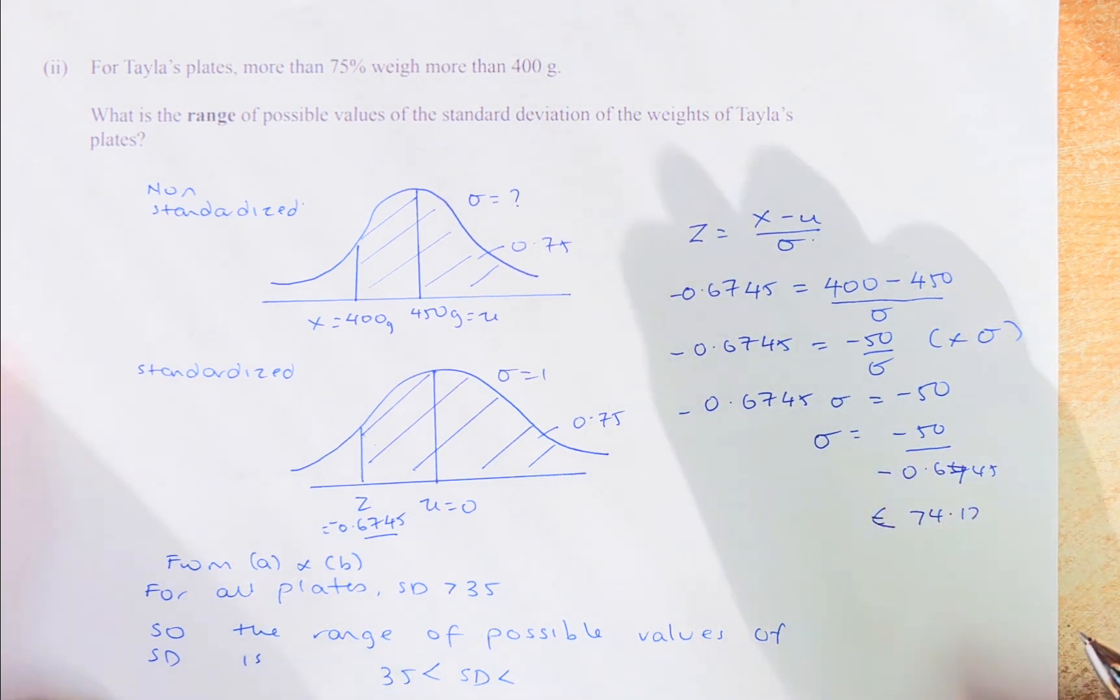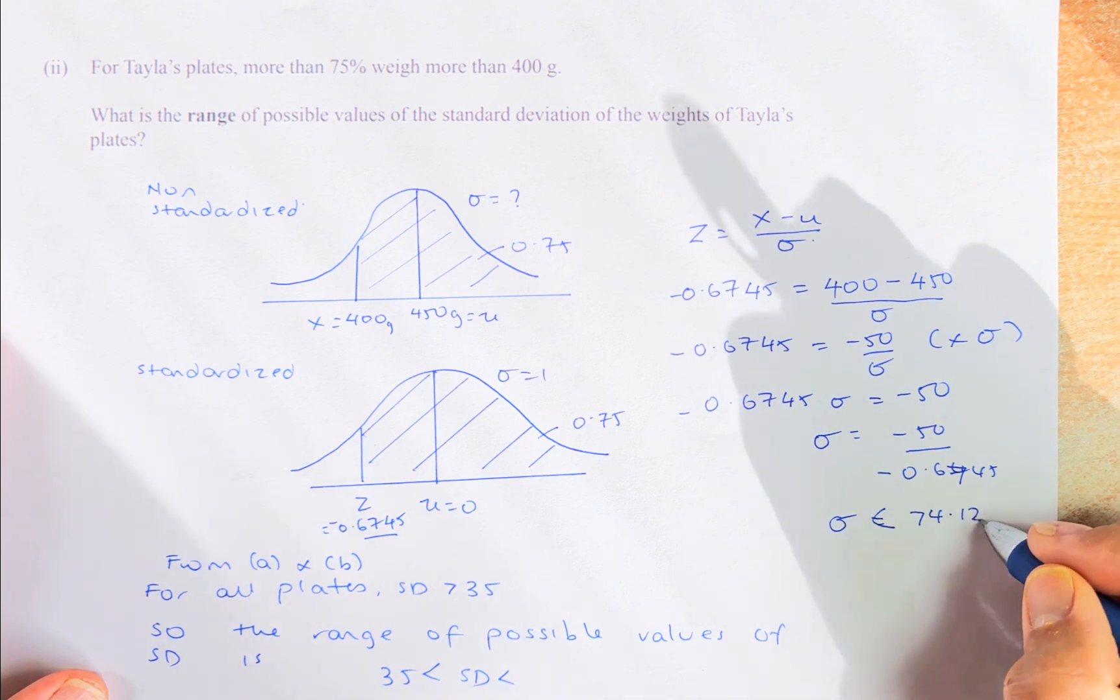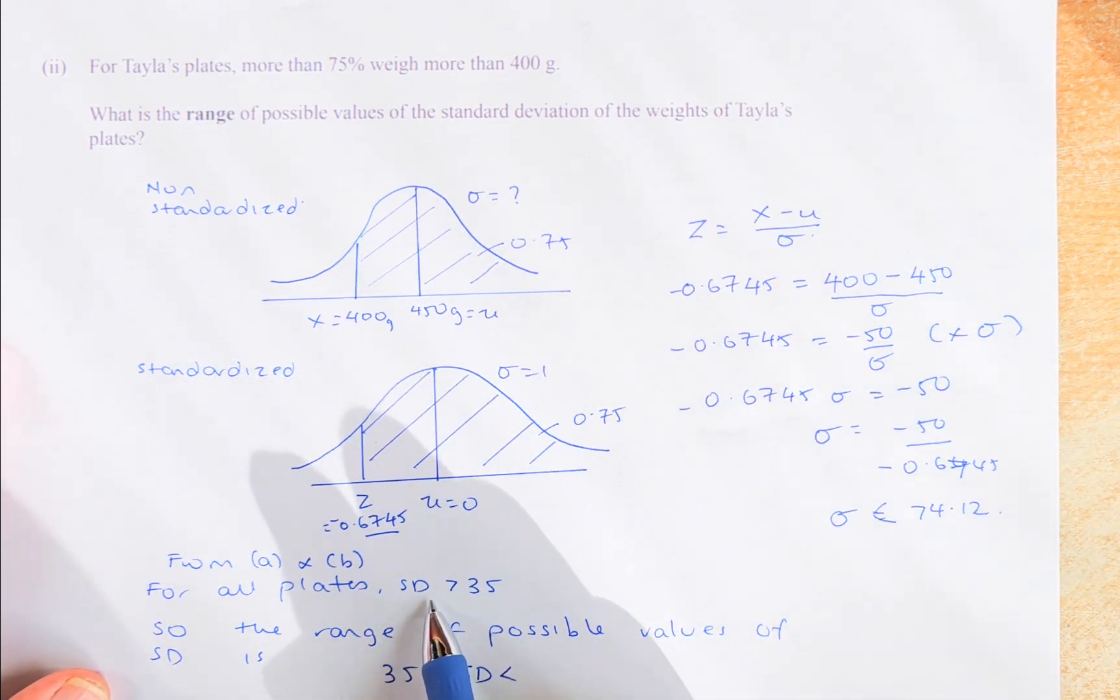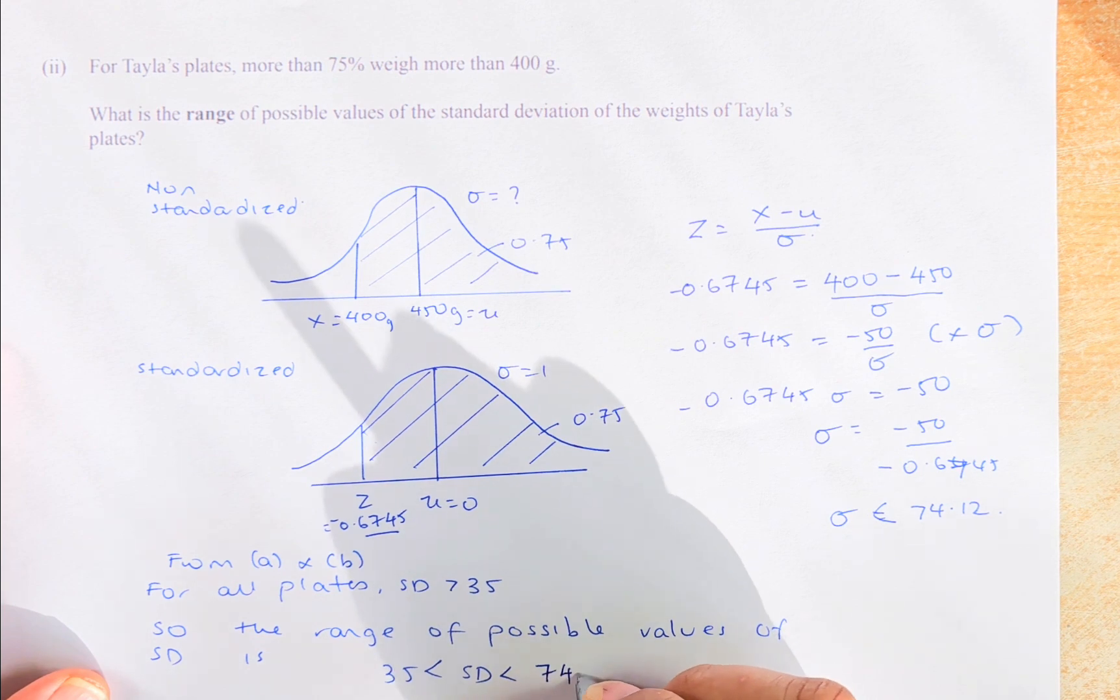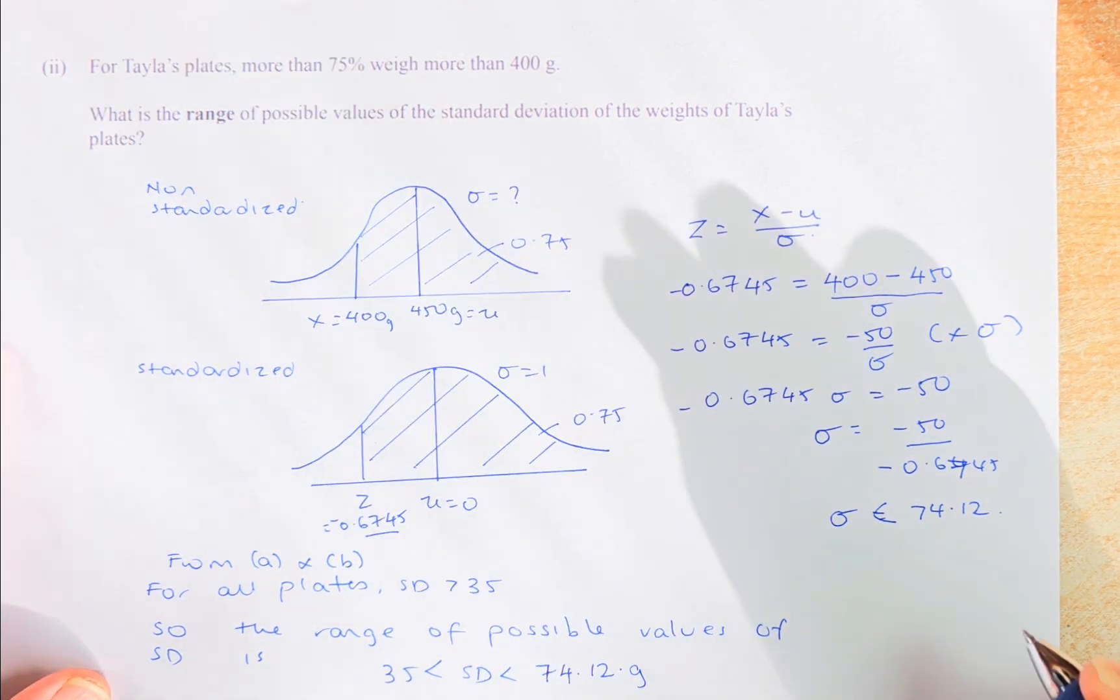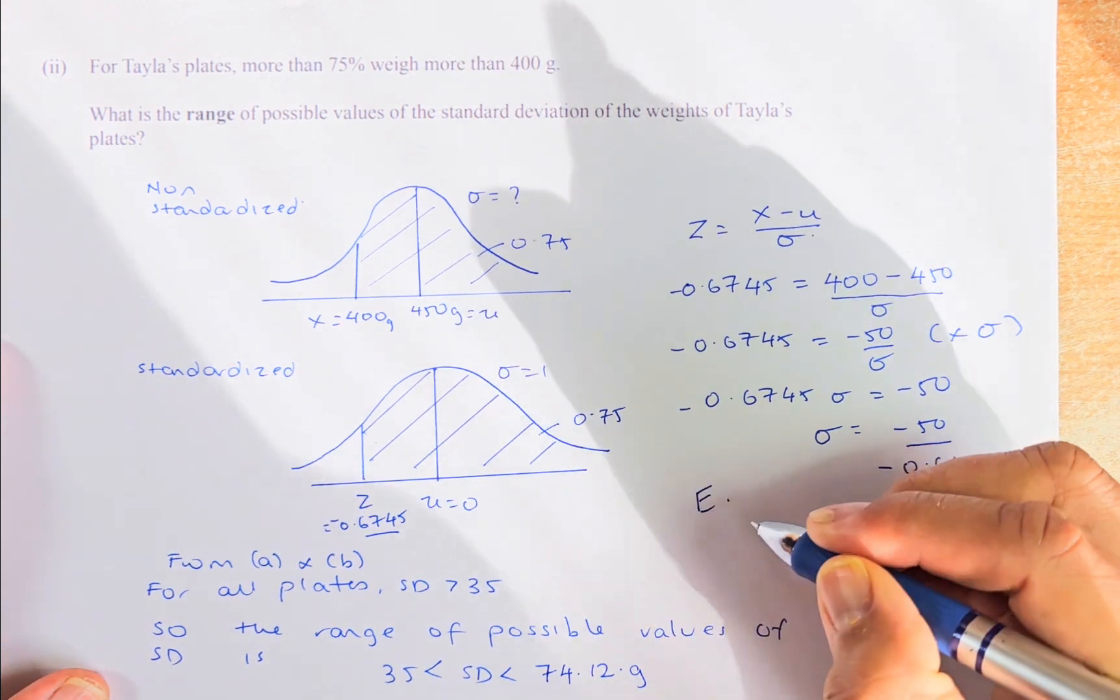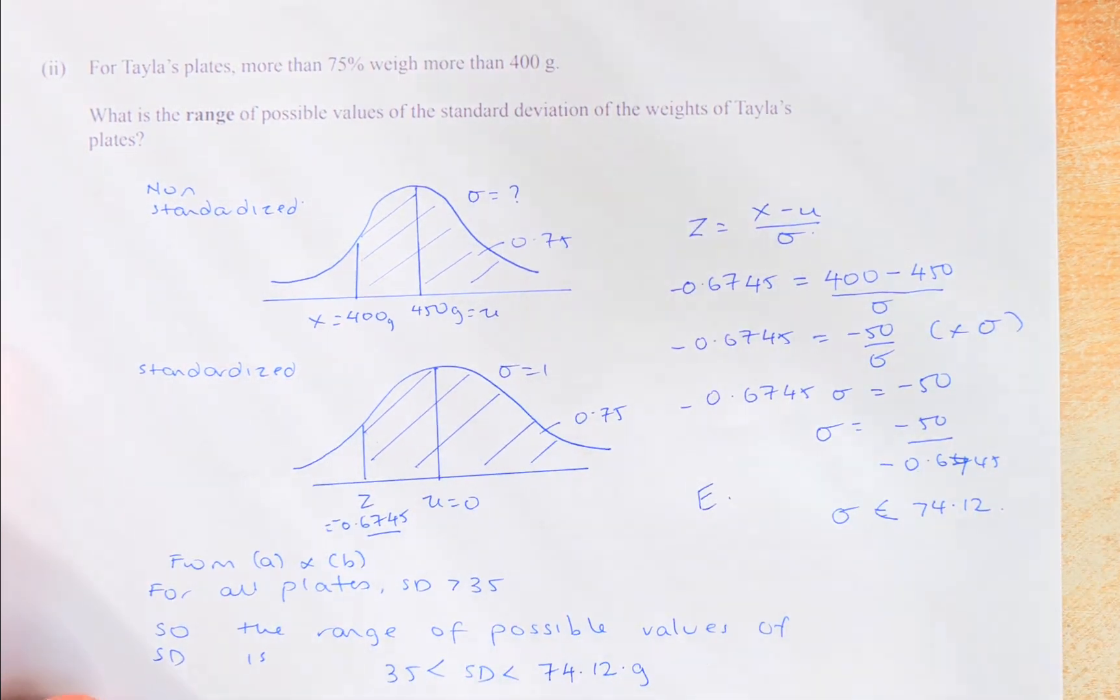74.12, so it will be less than. Sigma is less than 74.12. Because the first part of the standard deviation is more than 35, so the range of possible value of standard deviation is going to be between more than 35, but less than 74.12 grams. If you can do this, that will be an excellence in this paper, and you should be on the way to get excellence in this paper. Cheers, everyone, and have a good day.